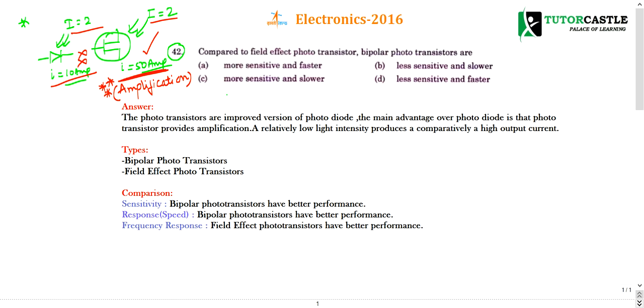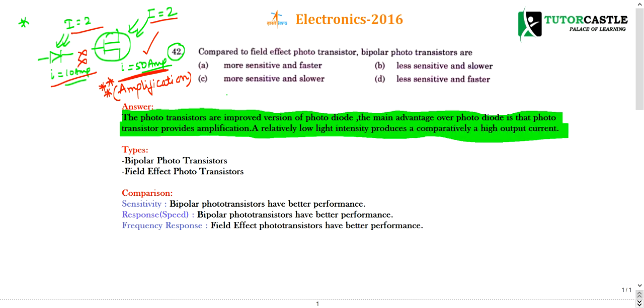Now let us go to the definition. What are photo transistors? Photo transistors are improved versions of photo diode. The main advantage over photo diode is that photo transistors provide amplification. A relatively low light intensity produces comparatively high output current.